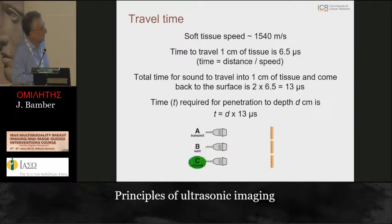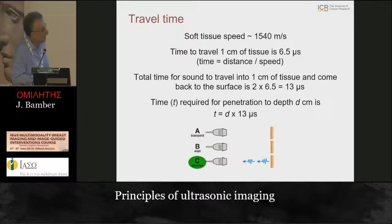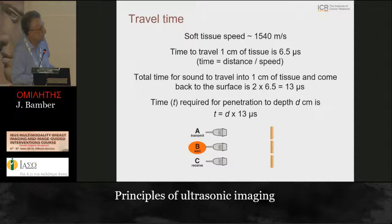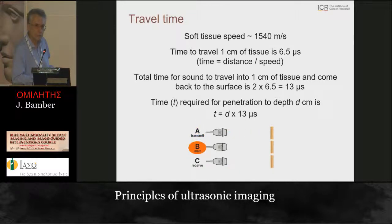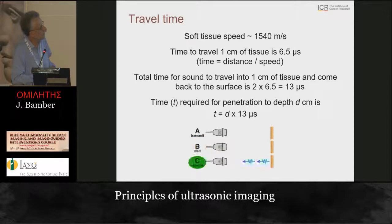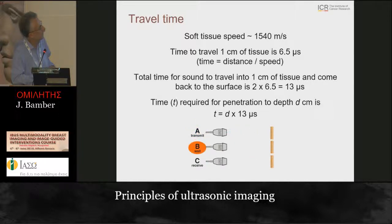Due to the speed of propagation of ultrasound, there is a limit to the combination of imaging depth, number of lines, and frame rate. When you transmit a sound pulse into the tissue, it has to travel to the depth of interest where it gets reflected, and then you have to wait for that reflection to come back before you can display the echoes. The total travel time to that depth and back determines the line rate.